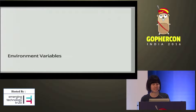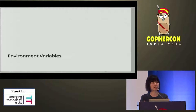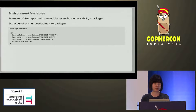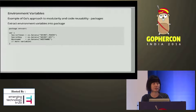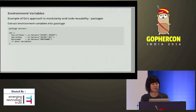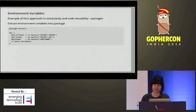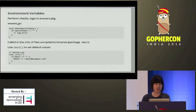Second: environment variables. You don't want to have lots of environment variables scattered across your codebase and find it hard to keep track of them all. What we did was extract them into a package of their own. This is an example of Go's approach to modularity and code reusability. We've defined a package called envvars. Inside the package, we define these environment variables as variables. Within this package, we can perform all our checks and logic.